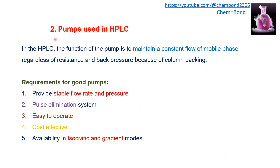The second component of HPLC instrumentation is pumps. The mobile phase carries the solute molecules through the column and passes towards the detector. The close packing of the HPLC column creates resistance in the mobile phase flow as well as back pressure. In HPLC, the function of the pump is to maintain a constant flow of mobile phase regardless of resistance and back pressure created due to column packing.